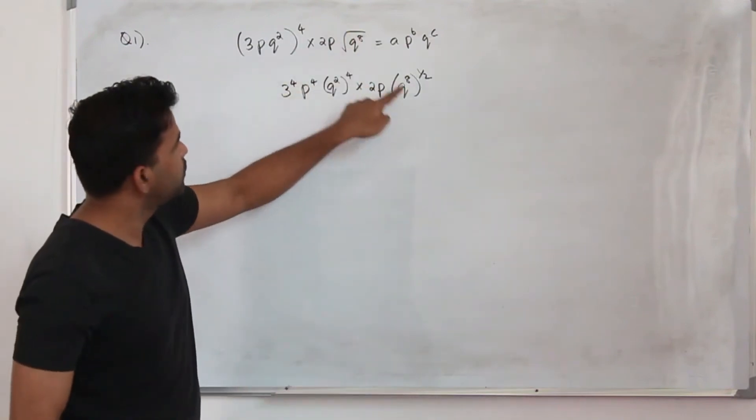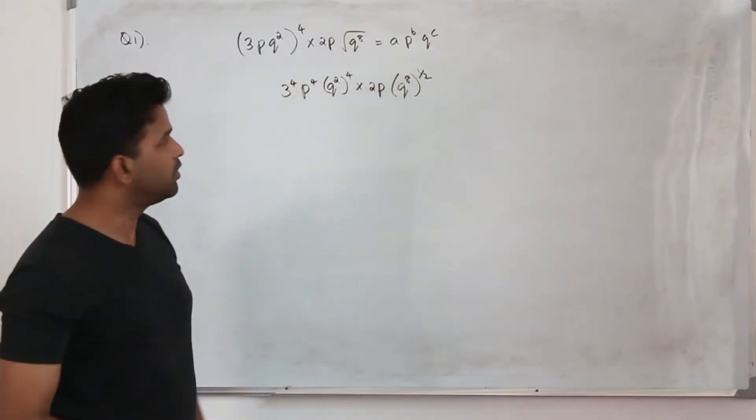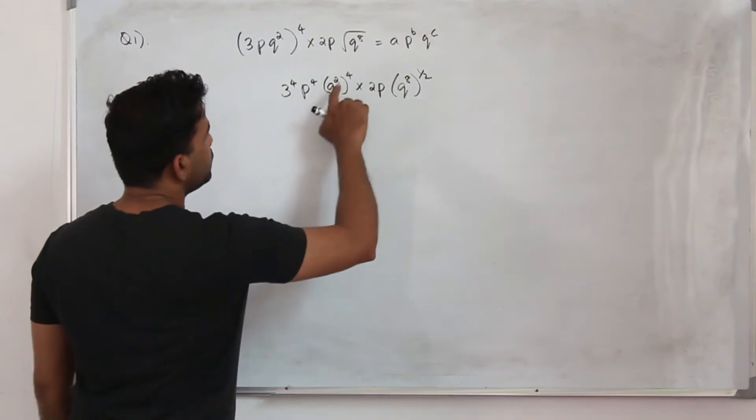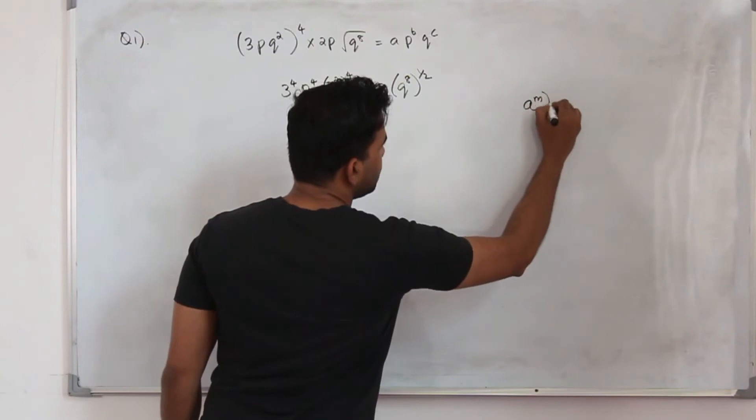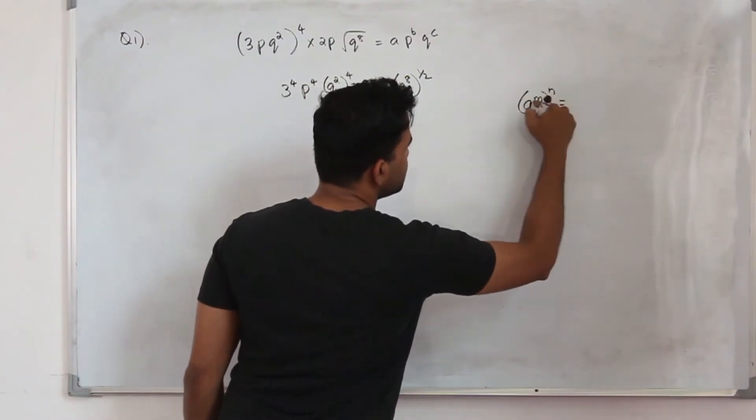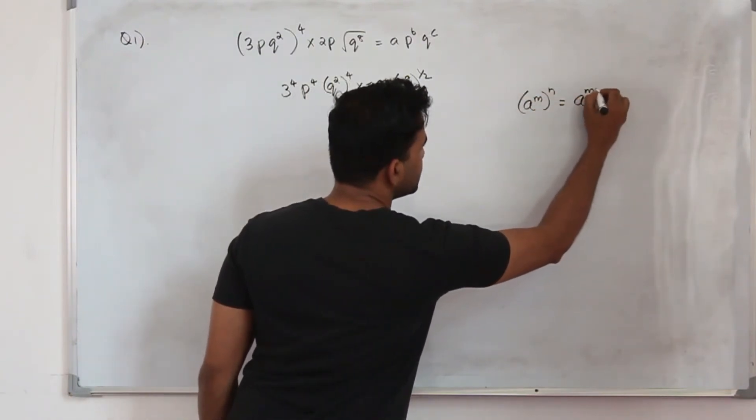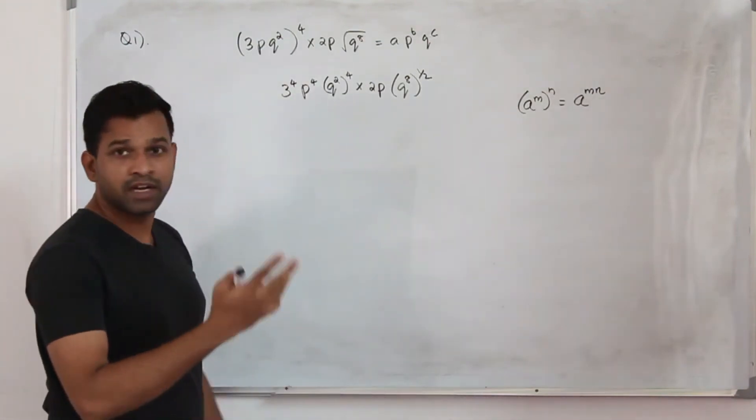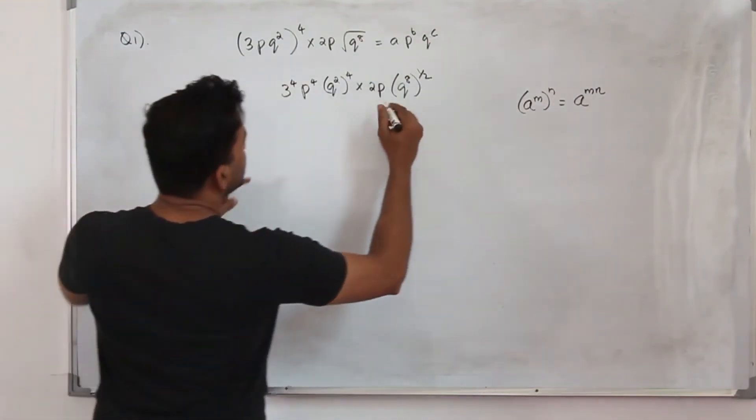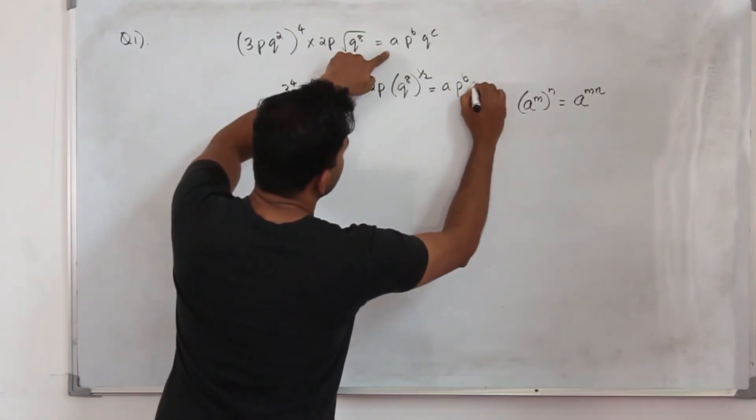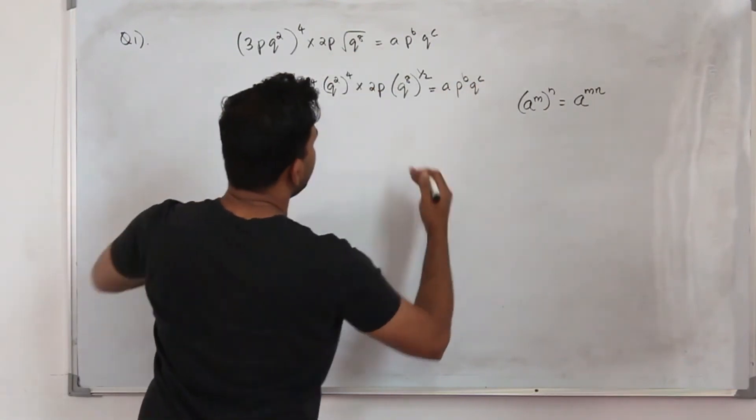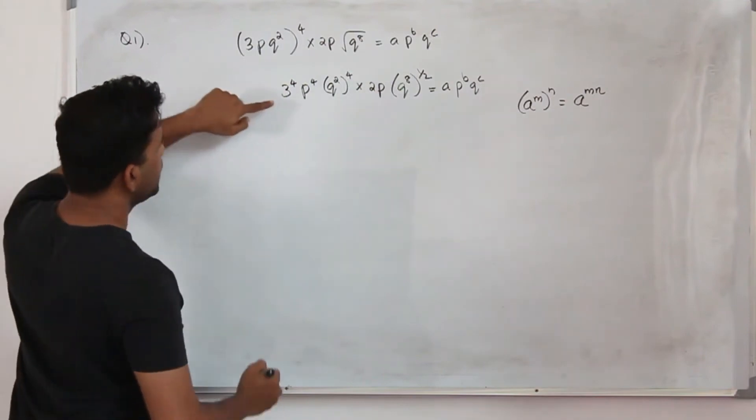Square root of q⁸ is q⁸ to the power half. Our laws of indices says if you have a to the power m to the power n, you can just multiply the exponents. Write it as m times n. We keep the right side terms as it is, so it will be easy for us to equate both sides.